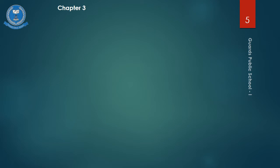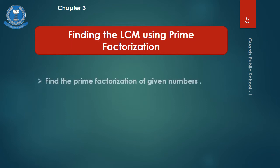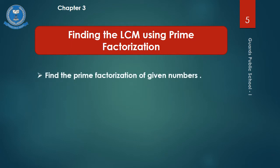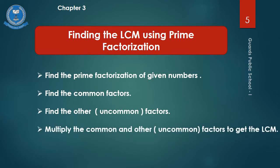Finding the LCM using Prime Factorization — in this, we follow these steps. First, find the prime factorization of the given numbers. Second, write down all the common factors. Third, write down the uncommon factors. And after this, multiply both the common and uncommon factors together to get the LCM.